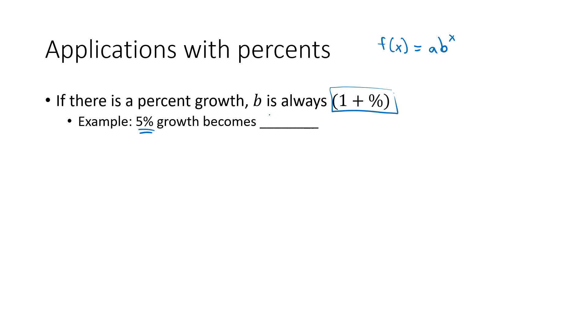That multiplier with percentages always has to be 1 plus that percentage. So for 5% growth, that's going to be 1 plus 5% as a decimal is 0.05. Or you could just write it as 1.05.